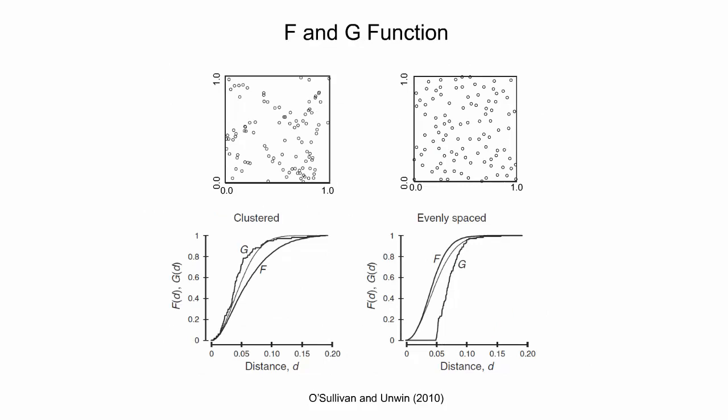The two point patterns shown on top can be used to demonstrate the relationship between the g and f functions. The left point pattern is clearly clustered; as a result, most events have close near neighbors, and the g-function rises rapidly at short distances up to about 0.05. In contrast, the f-function rises steadily across a range of distances. The right figure is evenly spaced, so the g-function does not rise at all until d is 0.05, after which it rises quickly, while the f-function again rises smoothly.